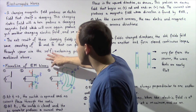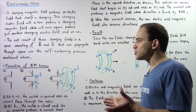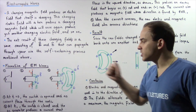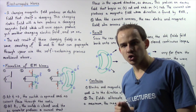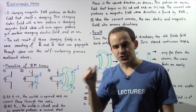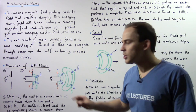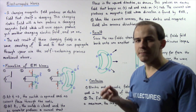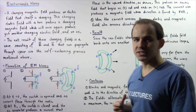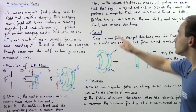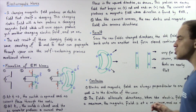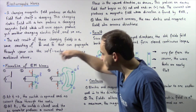Diagram three represents the situation at a later time T2. Because we are using an AC generator powered by an alternating voltage source, the voltage reverses after some time, causing the electric current to also reverse. When the current reverses, the new electric and magnetic fields also reverse directions, as shown in the diagram.